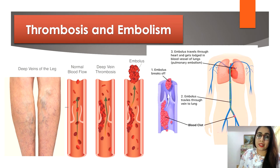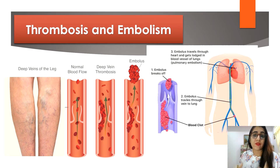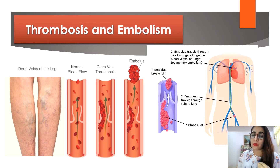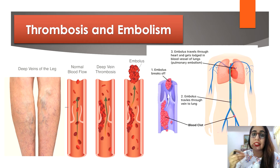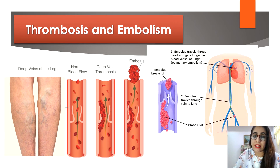Now let's look at thrombosis and embolism. Thrombosis is a blood clot formed in an artery or vein that remains stationary. Thrombosis happens when the formation of a clot in the blood vessel interrupts blood flow. Embolism is a thrombosis that moves and is carried in the blood flow.